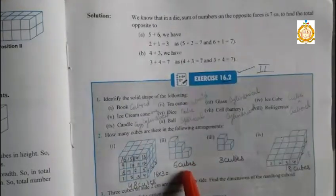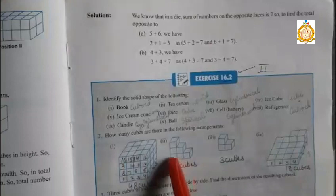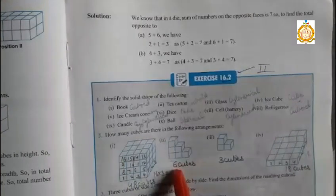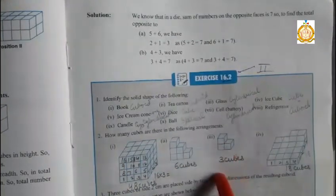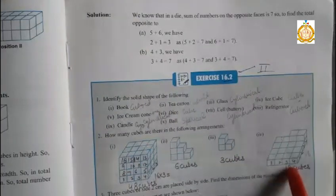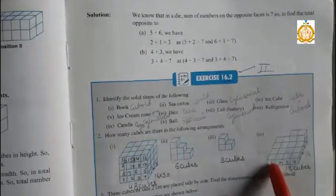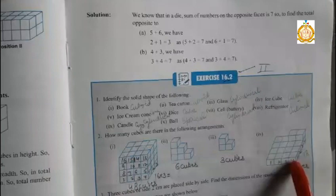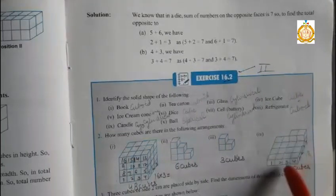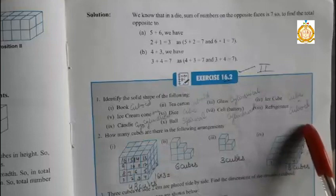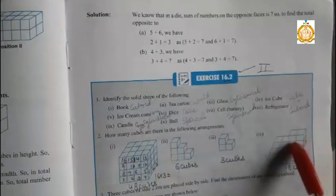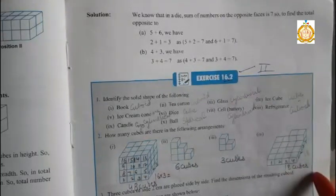Next, in the next arrangement, you can easily calculate 1, 2, 3, 4, 5, 6. 6 cubes are here. In the next, 1, 2, 3 cubes are here. Students, in the next, first of all, count the front: 1, 2, 3, 4 and side: 1, 2, 3, 4. 4 by 4 becomes 16 and 2 cubes on the upper side. 16 plus 2 equals 18 cubes.